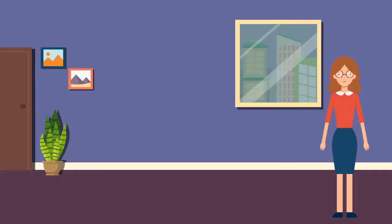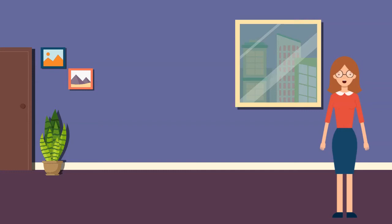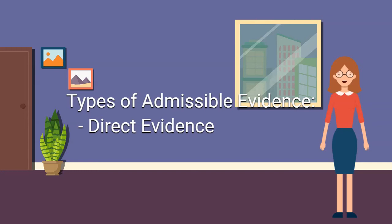Now, let us discuss the two basic types of admissible evidence: direct and circumstantial evidence. Direct evidence proves or disproves a fact directly. Examples of this are eyewitness testimony and confession.